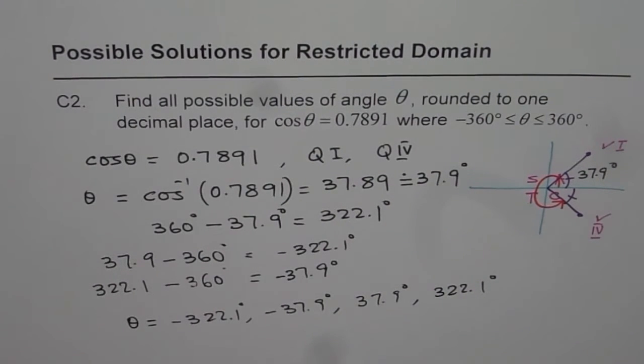So we know theta could be minus 322.1 degree or minus 37.9 degree or 37.9 degree or 322.1 degree. So these are all the possible solutions. I hope that makes it very clear.